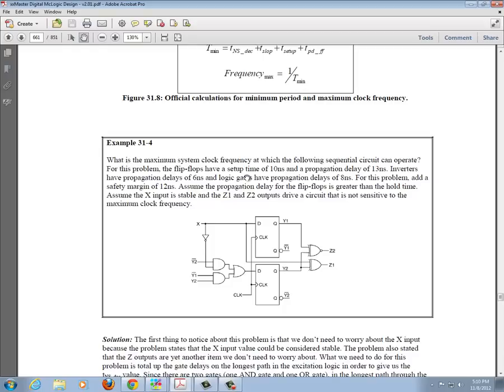For this problem, the flip-flops have a setup time of 10 nanoseconds and a propagation delay of 13 nanoseconds. Inverters have a propagation delay of 6 nanoseconds, so we see an inverter here. And logic gates, which would be AND gates and OR gates, have a propagation delay of 8 nanoseconds. For this problem, add a safety margin of 12 nanoseconds. And assume the propagation delay for the flip-flops is greater than the hold time, which means we can ignore the hold time.